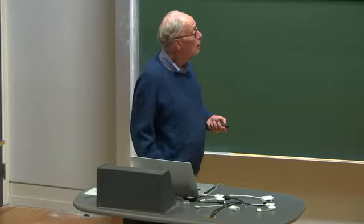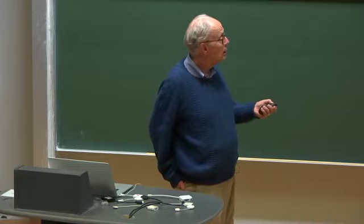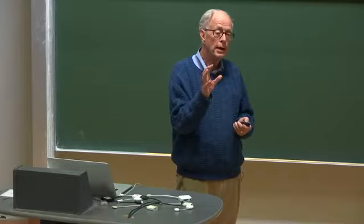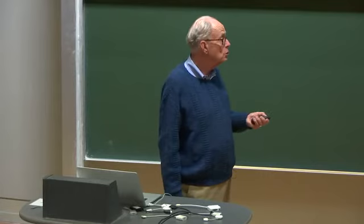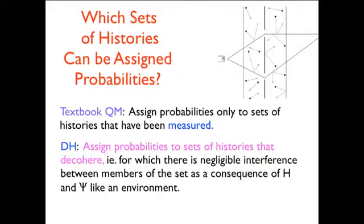So it's inconsistent to assign probabilities to that set of histories. So which sets of histories can be assigned? The ones for which there's no interference. Textbook quantum mechanics assigns probabilities only to sets of histories that were measured. But we can't be dealing with that, we're not outside the universe looking at it, we're inside. And you could have histories, quantum mechanics, you assign probabilities to sets of histories for which there's negligible interference between the members of the set as a consequence of the theory in Hamiltonian and so on.